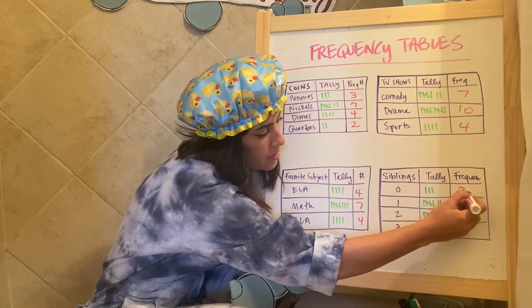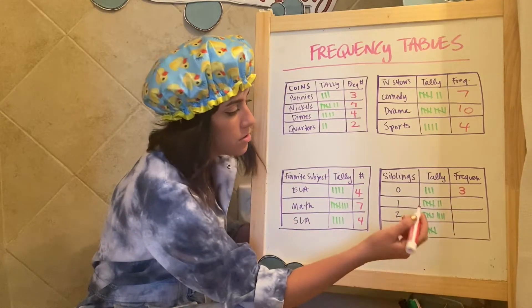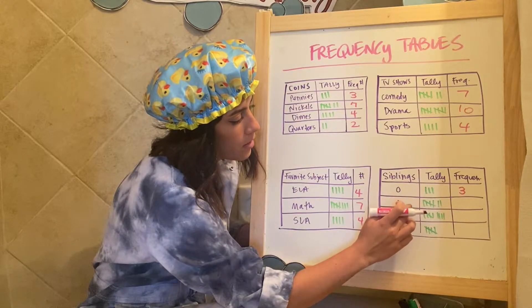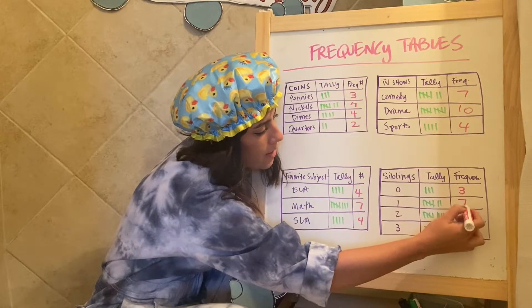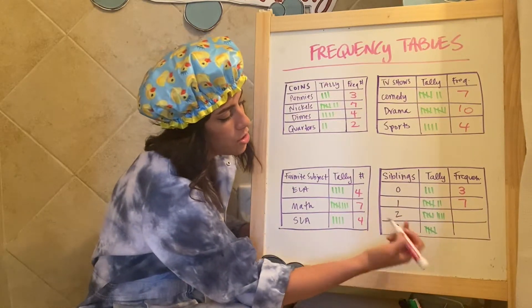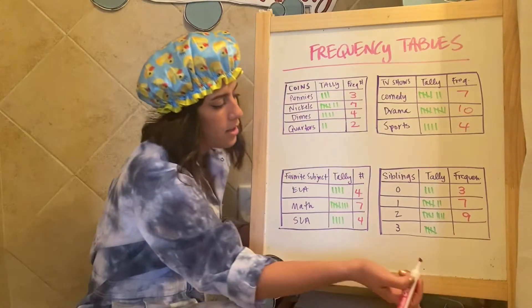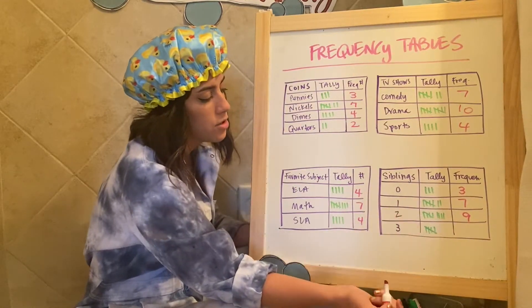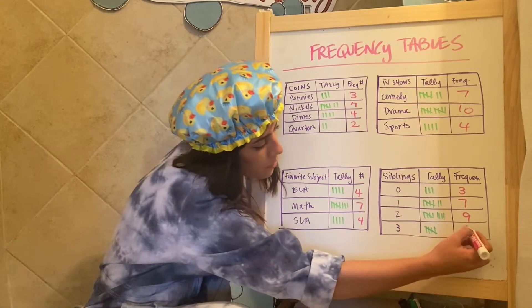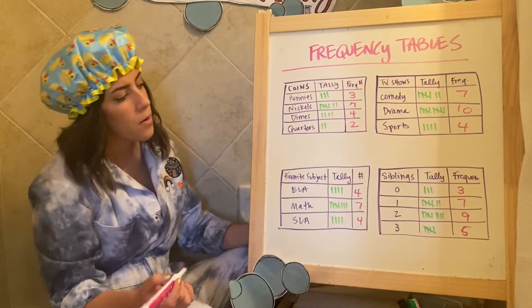Siblings, three people said they had zero siblings, brothers and sisters. Let's see, there were seven people that said they had one brother or sister, two people that said they had, excuse me, nine people that said they had two brothers and sisters and there were five that said they had three.